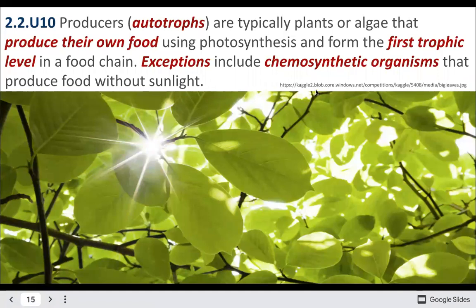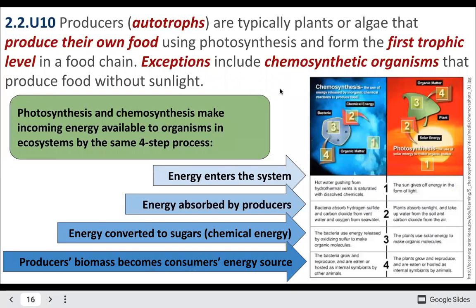Autotrophs make their own food. An interesting exception is deep-sea ocean vents, which have chemosynthetic organisms. 'Chemo' refers to chemicals — they make food from chemicals coming out of the earth, as opposed to photosynthetic organisms that use light. These are part of the Archaea domain and are very rare.